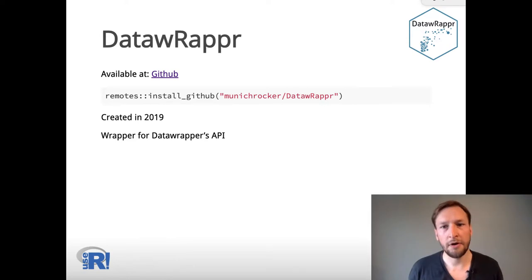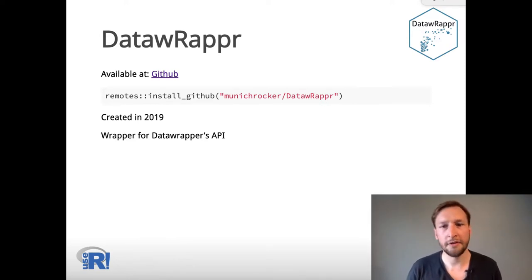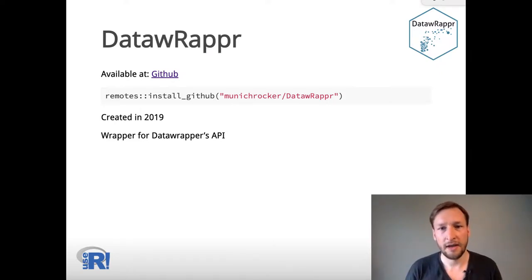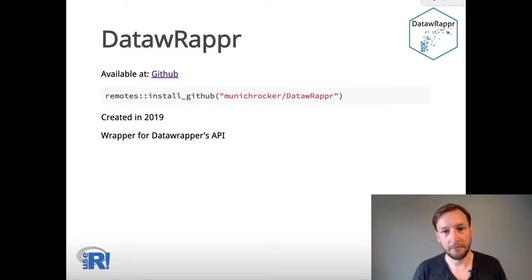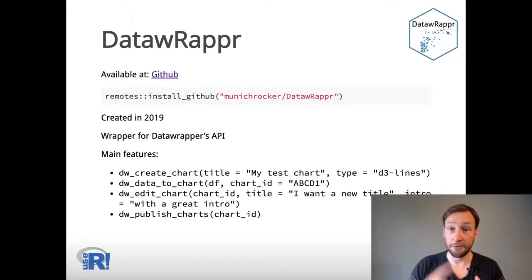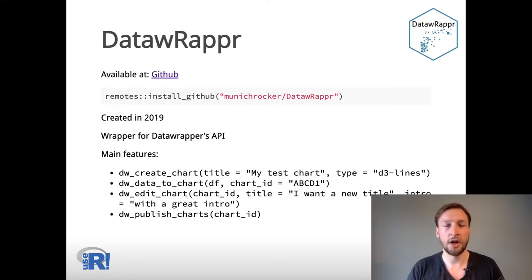I created DataWrapper — the R API library to the tool — at the end of 2019 as a leisure-time project, right on time for COVID. Until now it is only available via GitHub. It offers access to the most used functions from within R: creating, updating data and the elements of a chart, and publishing it.